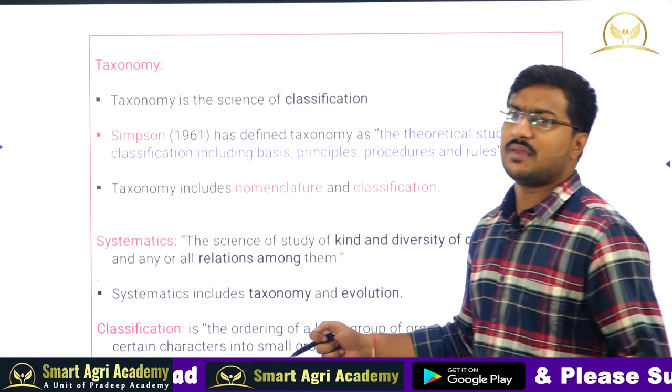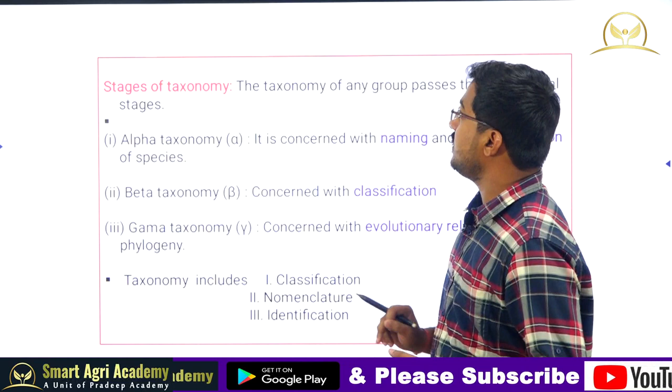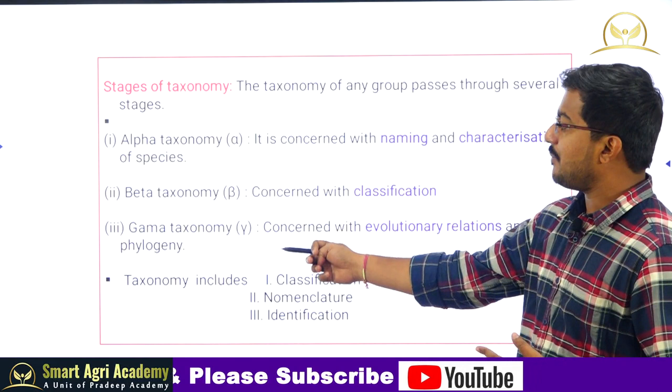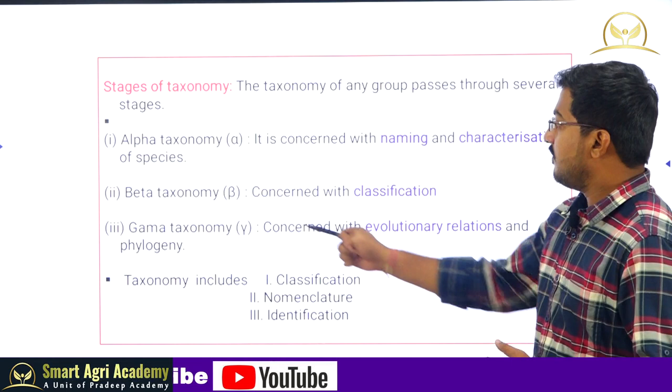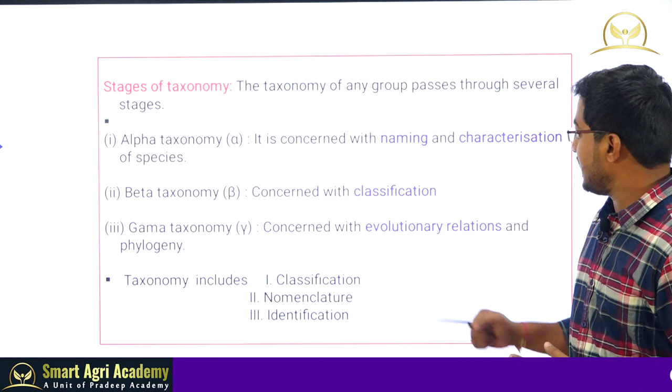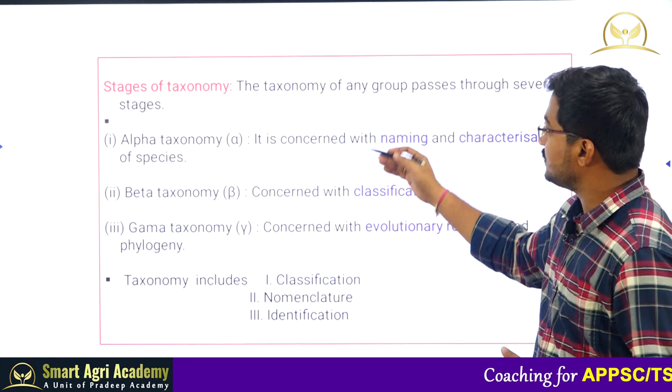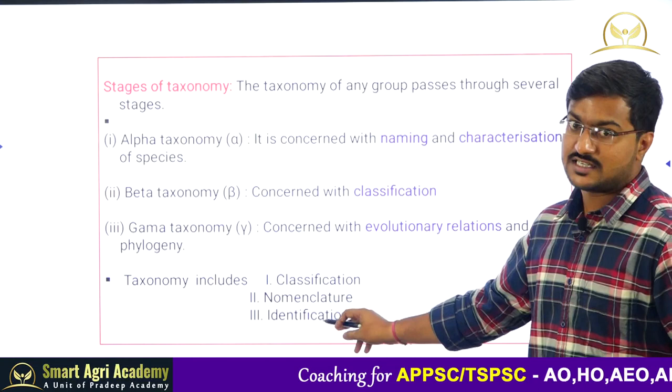Coming to the different stages of taxonomy: the taxonomy of any group passes through several stages — alpha, beta, and gamma taxonomy. Alpha taxonomy is concerned with naming and characterization of species; beta is concerned with classification; and gamma taxonomy is concerned with evolutionary relationships and phylogeny. Any classification has to pass through all three stages. Taxonomy includes classification, nomenclature, as well as identification of the organism.